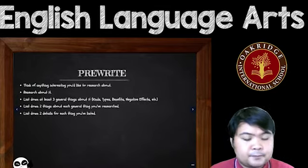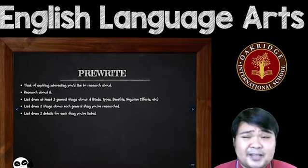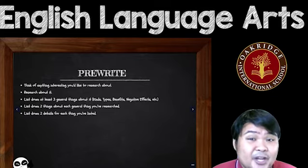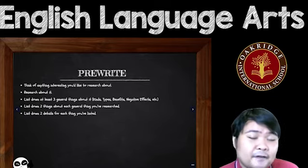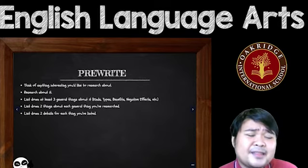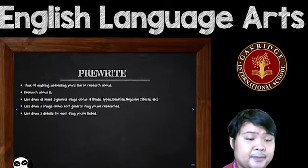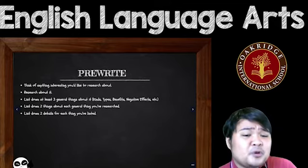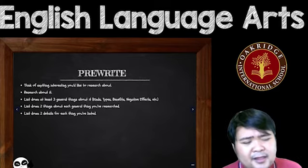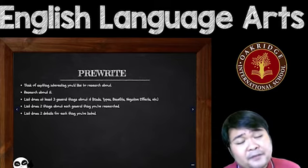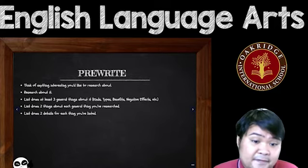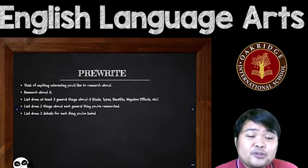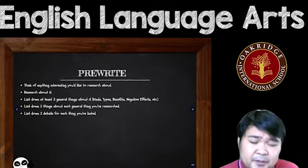For your pre-write, think of anything interesting that you'd like to research about — and yes, you have to actually research it. For example, coffee — you'd have to research about coffee. List down three general things about it, like kinds of coffee, benefits of coffee, or negative effects of coffee. Then list down two things about each of those general topics, like two different kinds, two different benefits, two different negative effects. And then for each of those, list down two details explaining thoroughly what you mean.